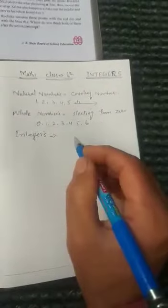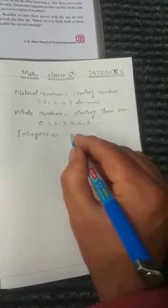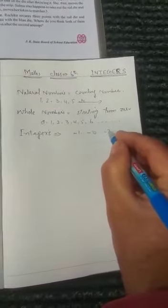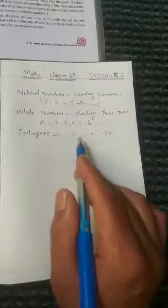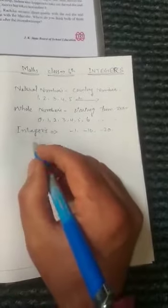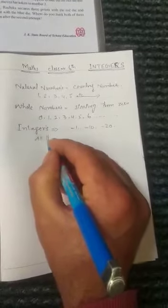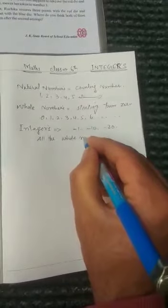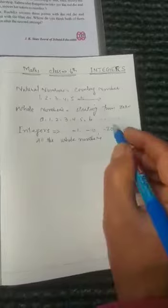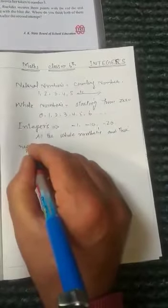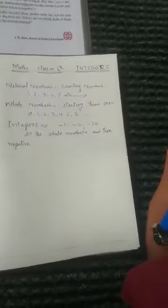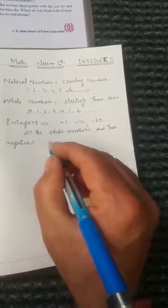We have learned about natural numbers and whole numbers. Now, numbers like minus 1, minus 10, minus 20 - these are negative numbers. All the whole numbers and their negatives, like minus 64, minus 35, and all other negatives together are called integers.